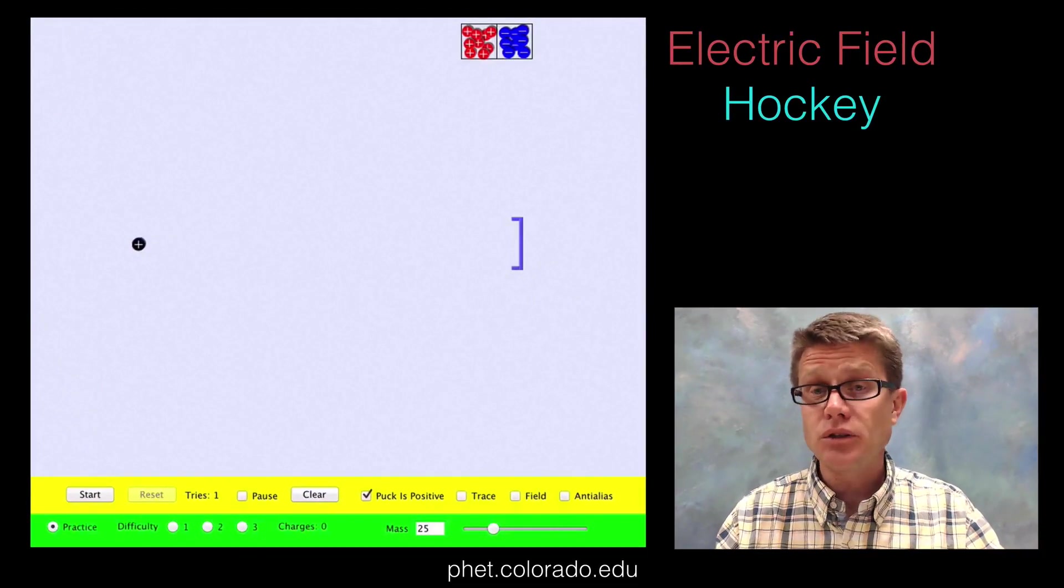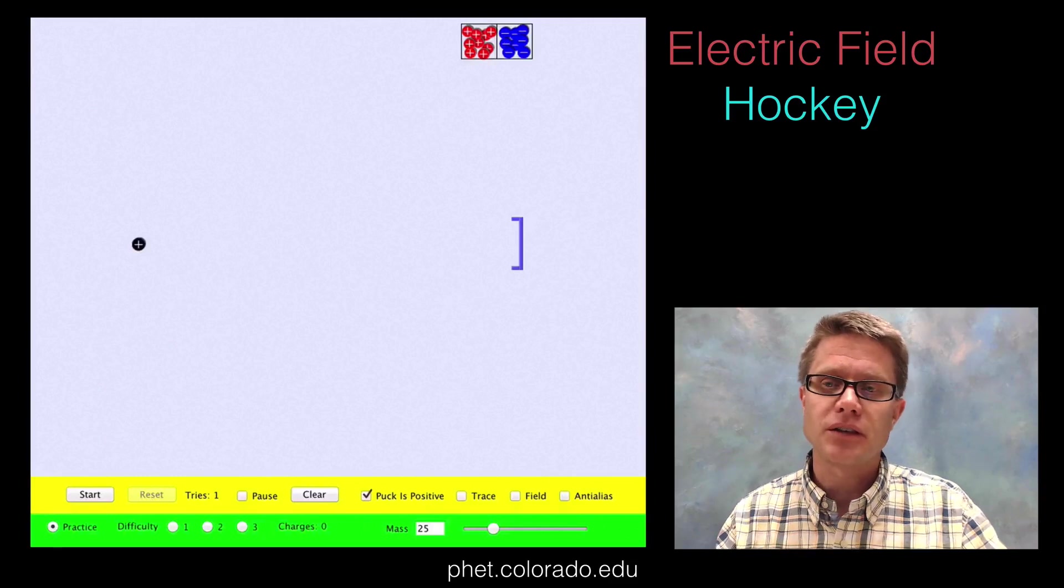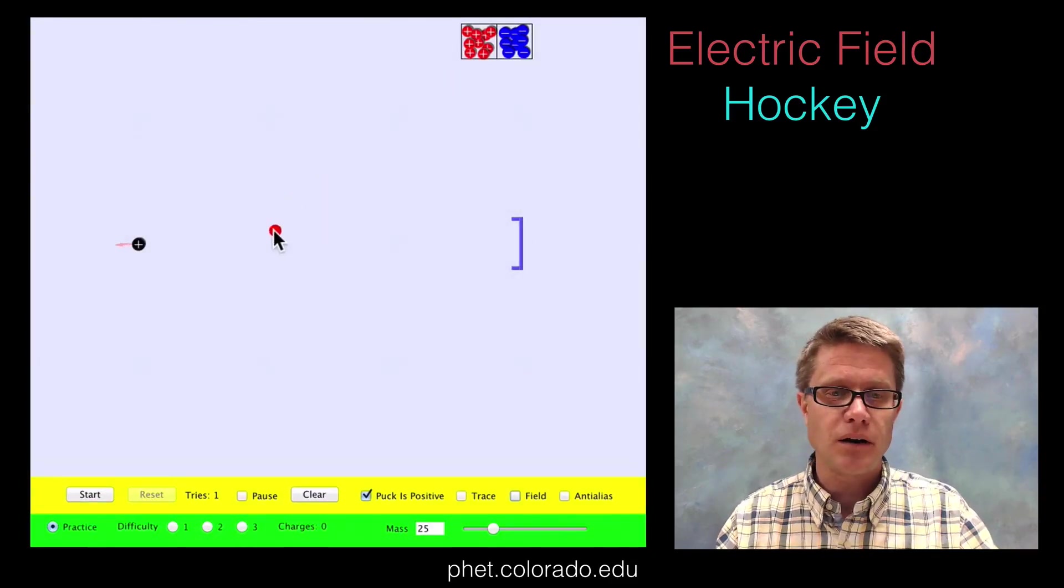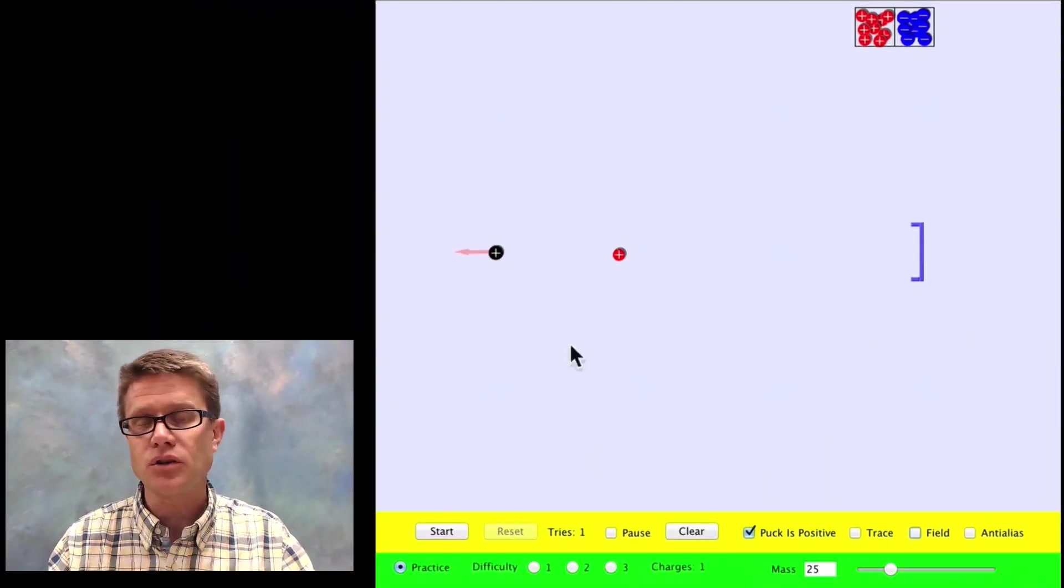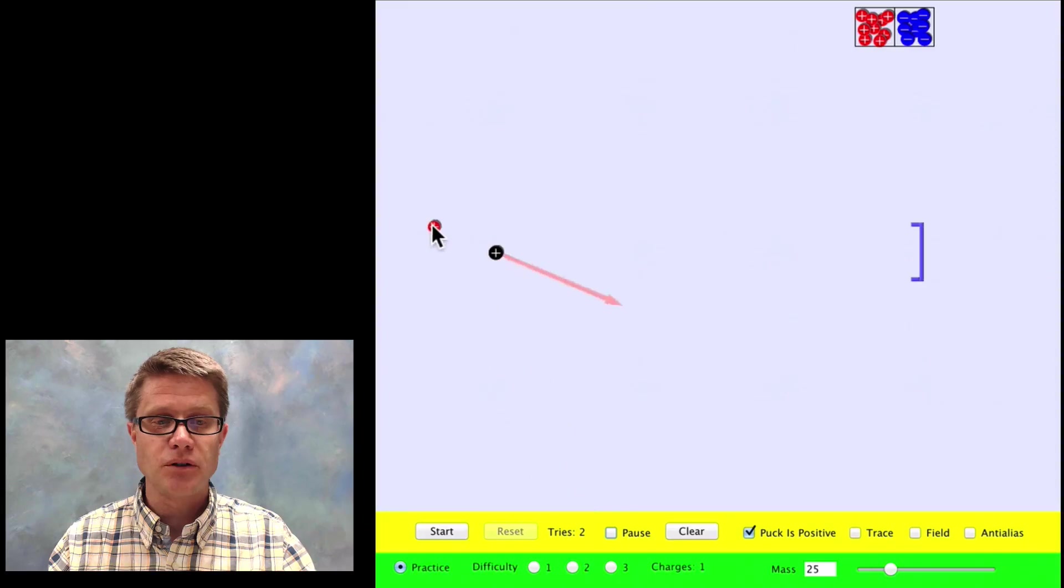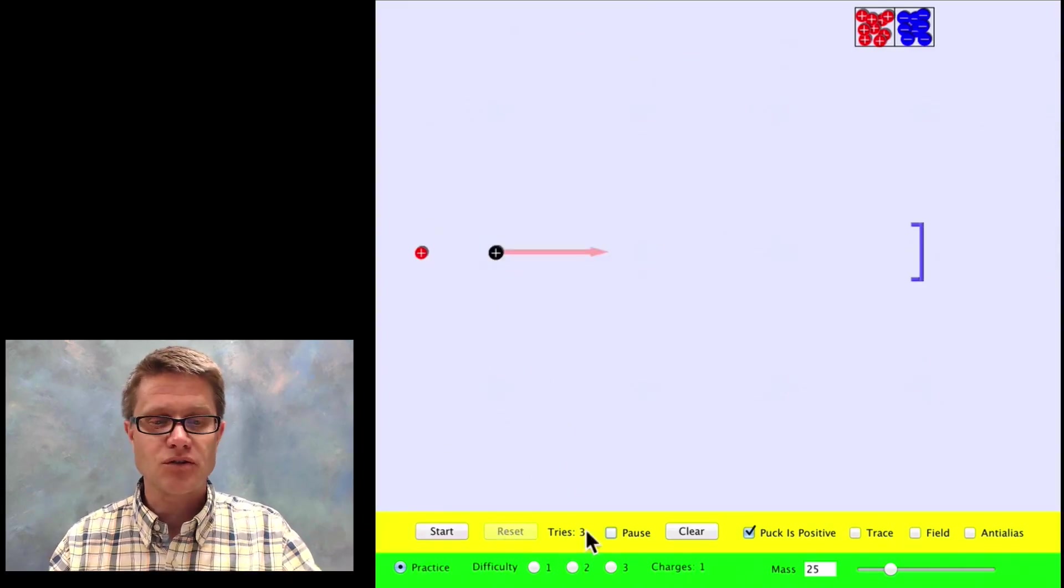A really good game that you could play is a PhET simulation called Electric Field Hockey. We're going to use a puck that has a positive charge and then put a source somewhere else. When we start it there is repulsion. We could put it on the other side of the puck, start it, and then score a goal.